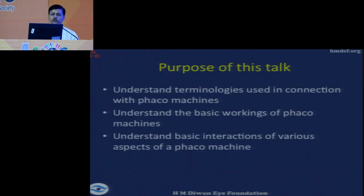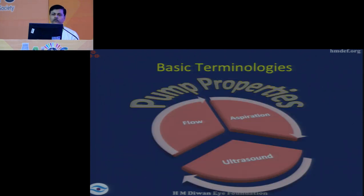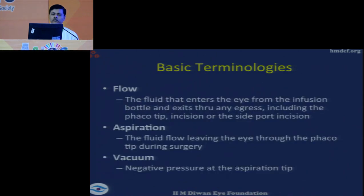The purpose of my talk is to explain the terminologies used in connection with the phaco machine and to understand its basic workings. If you break up the phaco machine, it is comprised of a system of flow, a system of aspiration, and a system of ultrasound. These three parameters work hand-in-hand to deliver the results of phacoemulsification. The flow is the fluid that enters the eye, coming from the infusion bottle, and exits through any egress point — the side port leakage, the main incision leakage, and leakage from aspiration from the phaco probe.